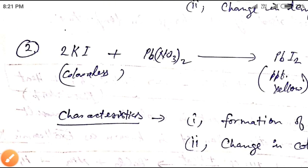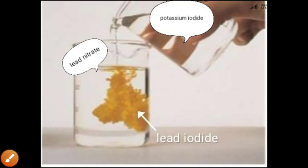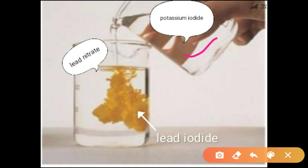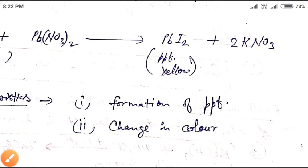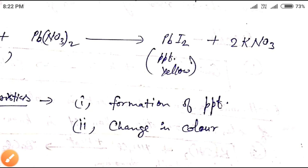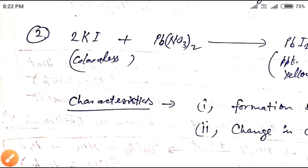Both the potassium iodide solution and the lead nitrate solution are colorless. However, when they react, a precipitate of lead iodide is formed which is yellow in color. So a change in color occurs from colorless solutions to a yellow color.